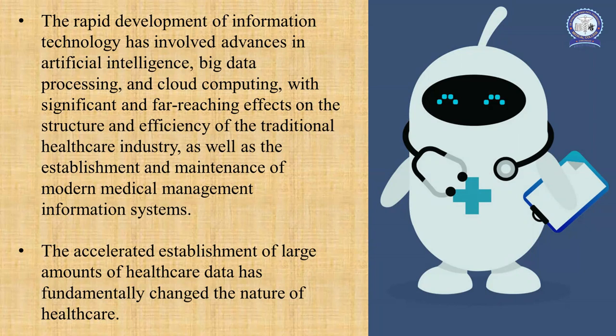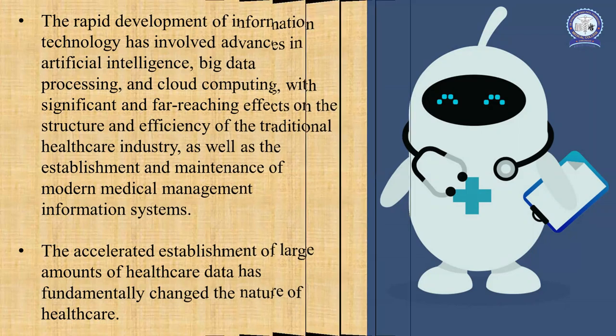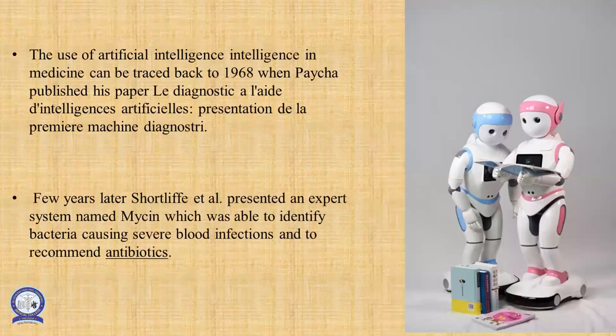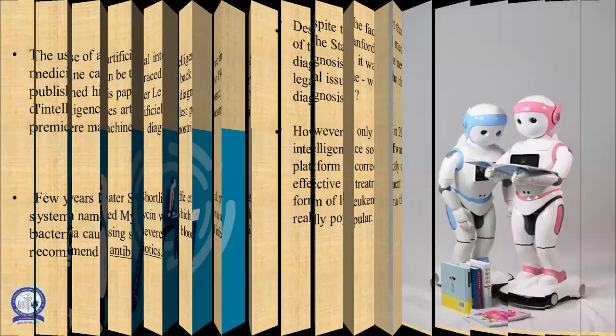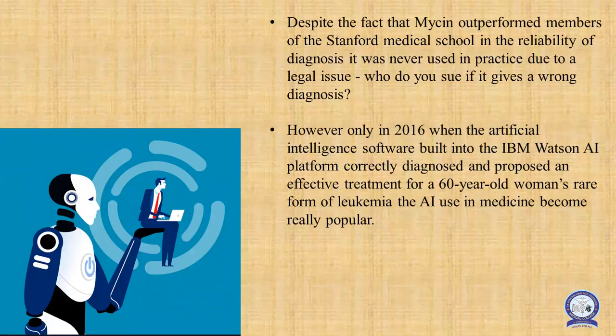The accelerated establishment of large amounts of healthcare data has a fundamental basis in artificial intelligence. The use of artificial intelligence in medicine can be tracked back to 1968 when Paicha published his paper on artificial intelligence. A few years later, Shortliffe et al. presented an expert system named Mycin, which was able to identify bacteria causing severe blood infections and to recommend proper antibiotics. Despite the fact that Mycin outperformed members of the Stanford Medical College in the reliability of diagnosis, it was never used in practice due to legal issues.